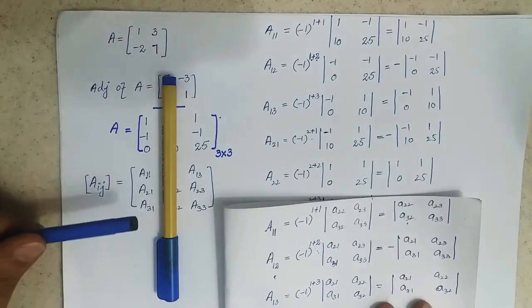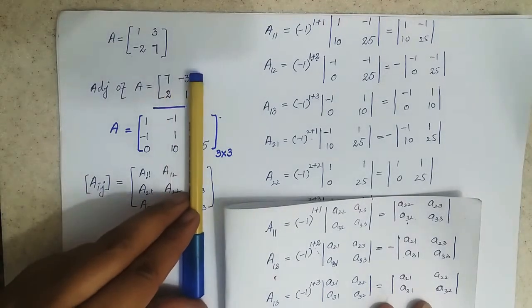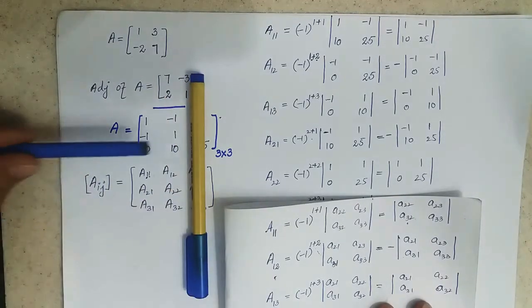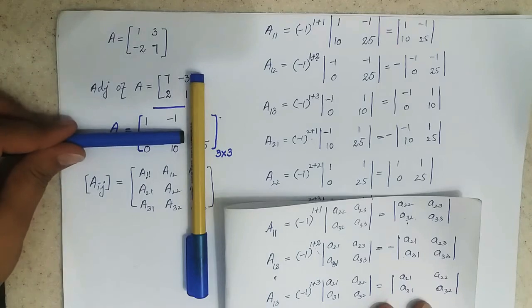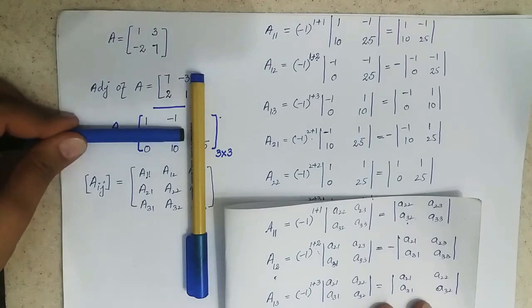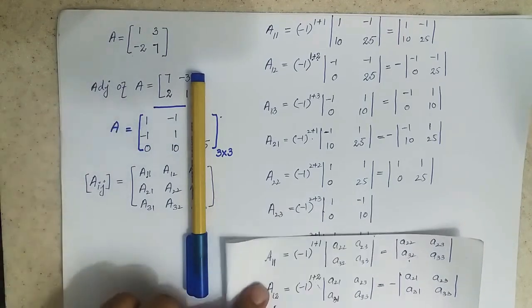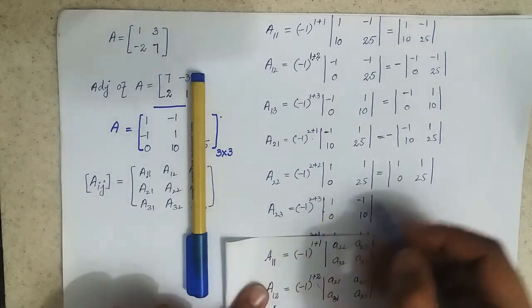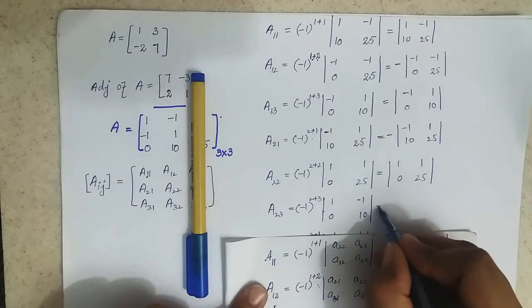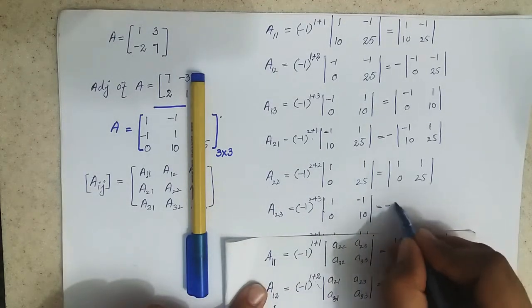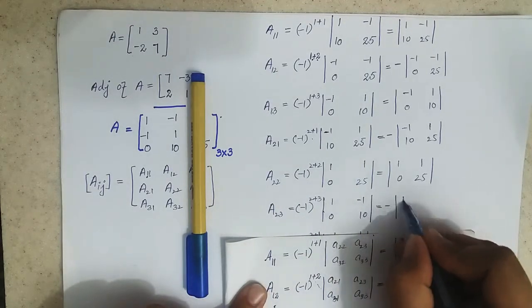For A23, we leave the second row and third column. The inside elements are 1, minus 1, 0, and 10. The power is odd, so it will be equal to minus of this determinant.